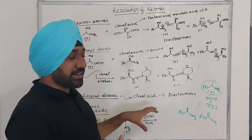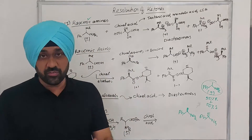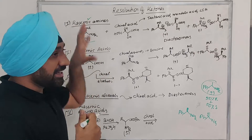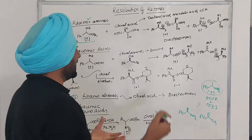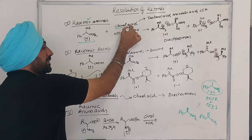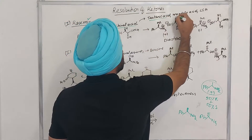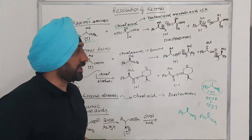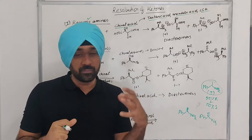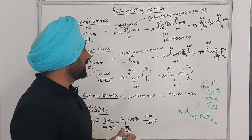Now let us suppose if we are given a racemic amine instead of the ketone. We know that a racemic amine can easily form salts with various acids. So in that case, what we do is carry out a reaction between the racemic amine and a chiral acid. A chiral acid — it can be tartaric acid, it can be mandelic acid, it can be camphorsulfonic acid. The key requirement is that when you get the diastereomeric pair, it should be crystalline, so that you can easily separate the diastereomers via crystallization and other techniques.